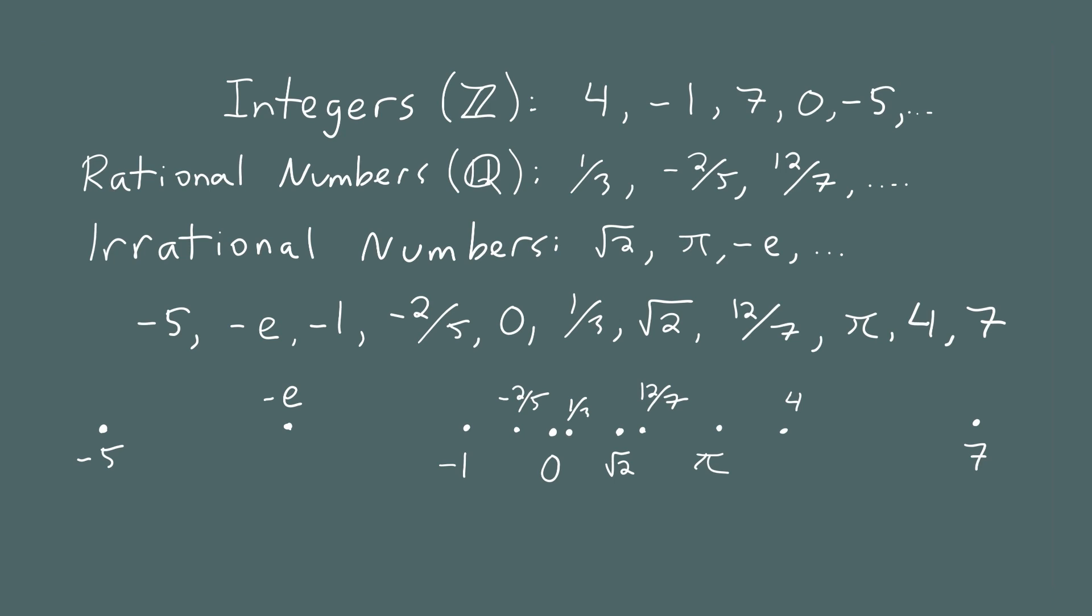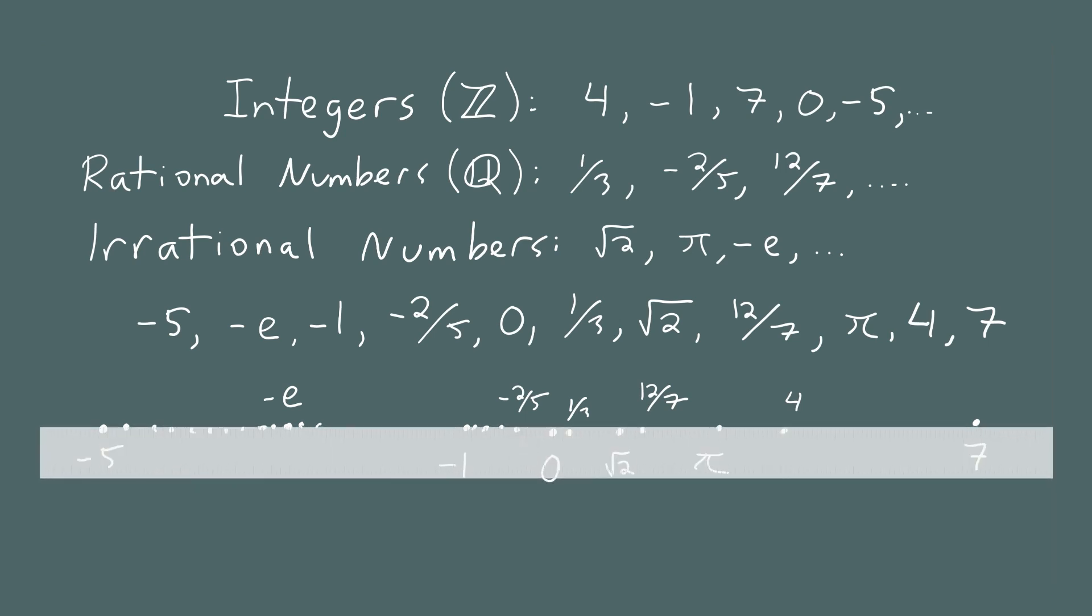So these are the 11 sample real numbers that we chose: integers, rational numbers, and irrational numbers. We drew a dot and spaced it out as best as we could, drawing one dot to represent each number, arranged from the smallest number on the left to the largest number on the right. We could keep picking more integers, more rational numbers, more irrational numbers. As we do that, the dots will rapidly fill up the spaces.